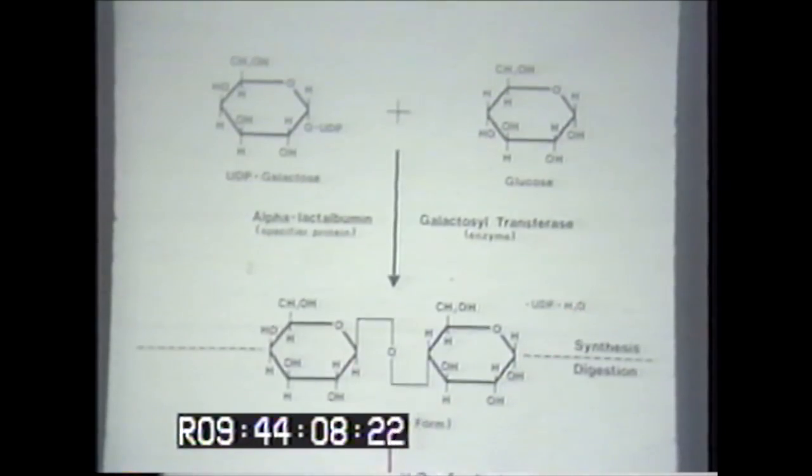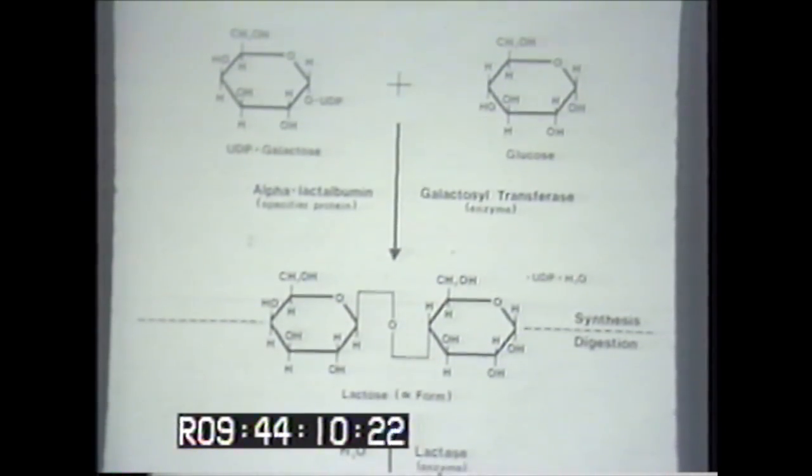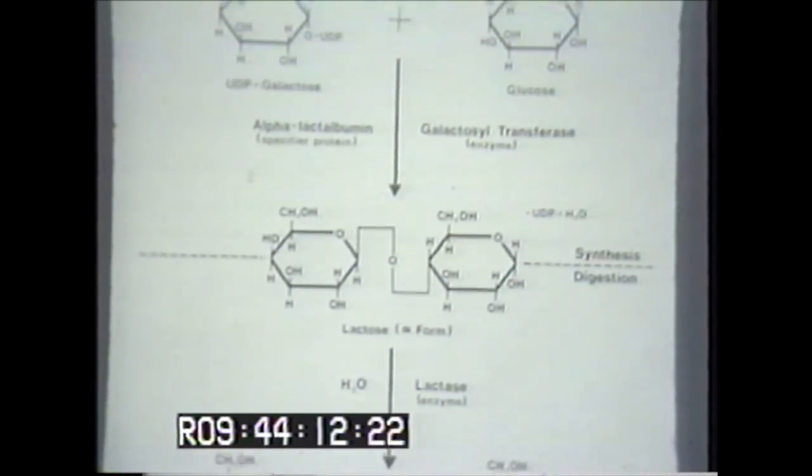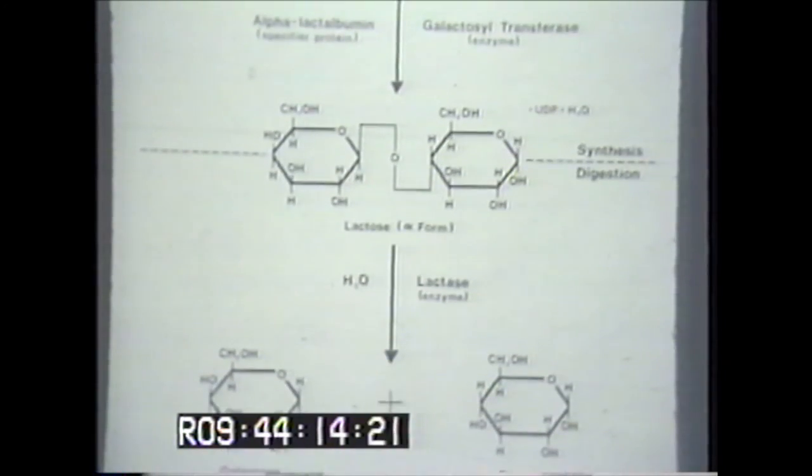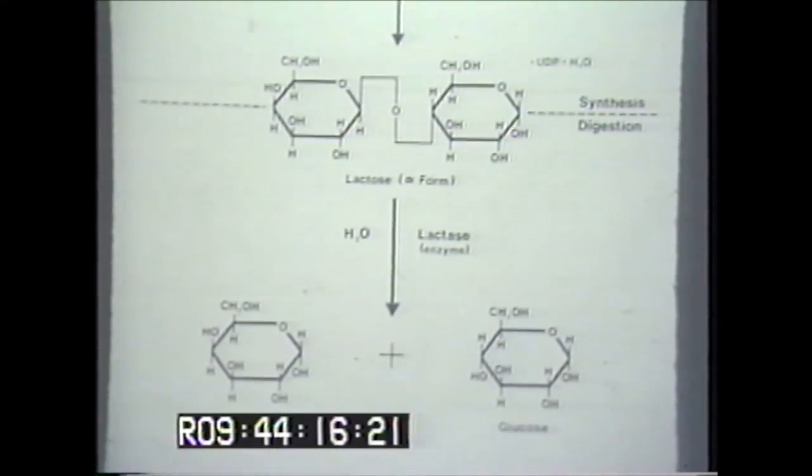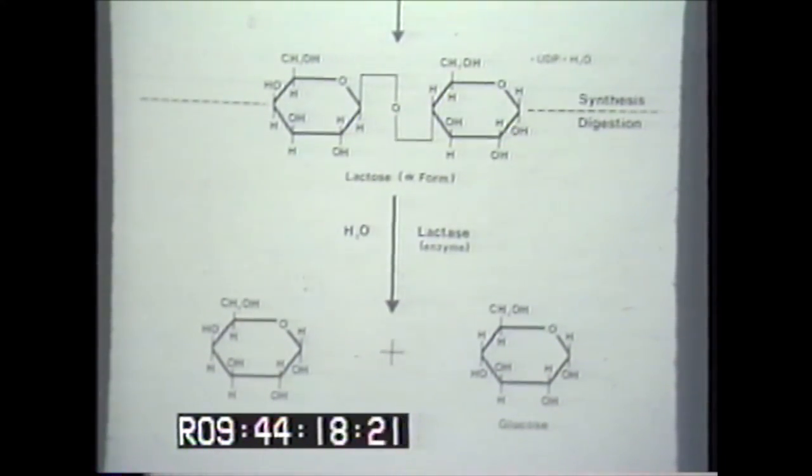Why did we take galactose and glucose and hook them together to get lactose only to break them back down with lactase for ingestion? Here we have the glimmer of an answer. The lactose molecule has the property of stimulating calcium absorption in the gut that neither monosaccharide has.